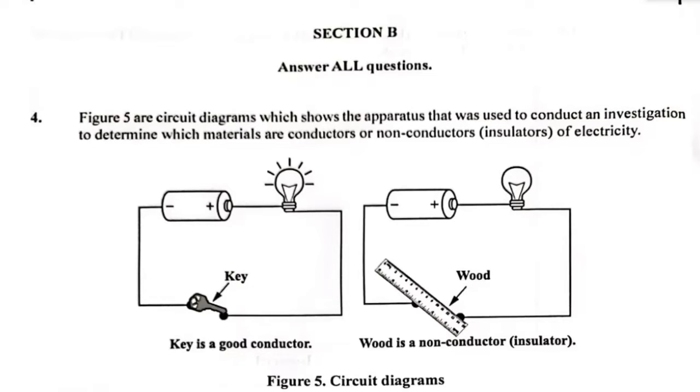Figure 4 are circuit diagrams which shows the apparatus that was used to conduct an investigation to determine which materials are conductors or non-conductors of electricity. Here we have key being used to close the circuit and we got the lamp to light up. Over on the right where wood is shown as a non-conductor or an insulator, we did not get the lamp to light up. So nothing was there to carry the current.